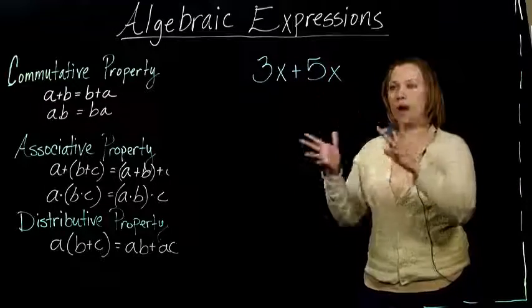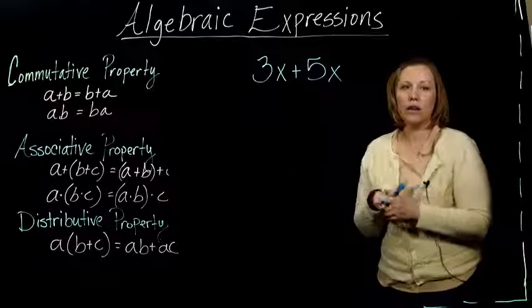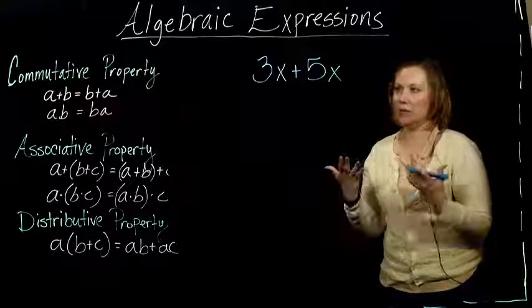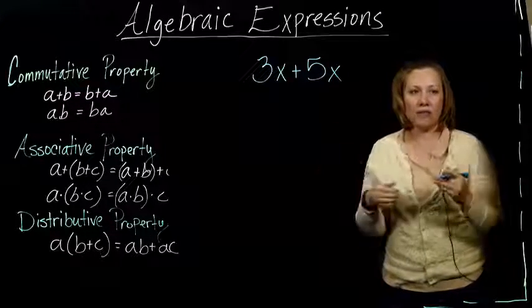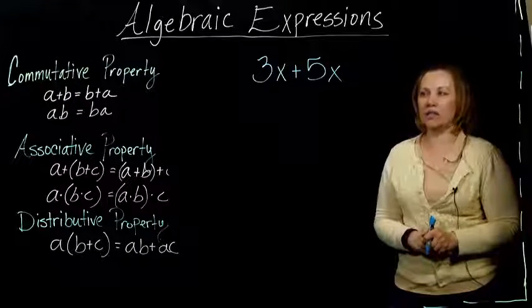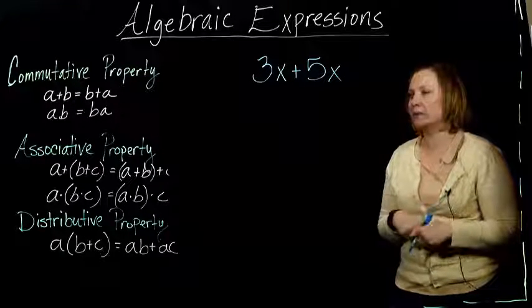So how do these properties that I've talked about - the commutative, associative, and distributive properties - what do they have to do with our algebraic expressions, and how can they help us simplify them?